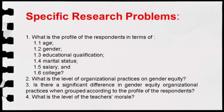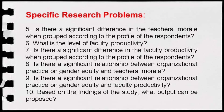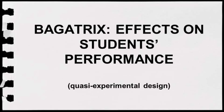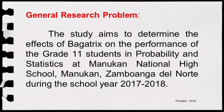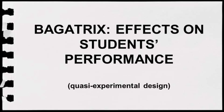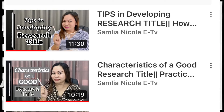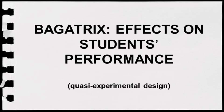So our specific research problems are the following. In this title, 'Bagatrix Effects on Students' Performance,' our general research problem is: 'The study aims to determine the effects of Bagatrix on the performance of the grade 11 students in Probability and Statistics at Manuka National High School, Manuka Zamuanga del Norte, during the school year 2017–2018.' Dito pa lang sa general statement, maglagay ka na ng scope and limitations. You'll notice na sa title natin walang grade level, course title, name of school, location, and period — kasi on the tips on writing good research title, meron tayong ideal na number of words sa ating title. It is more fitting to write this information here in the problem statement and in the scope and limitations sections.